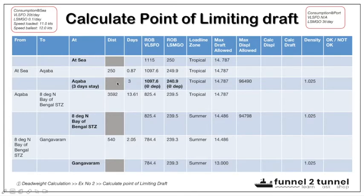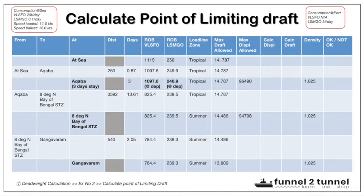The fourth column is the distance between the two legs. The fifth column is the number of days transiting from one point to another, or days staying at port. Subsequent columns are ROB of bunkers including VLSFO ROB and LSMGO ROB. Also included are the applicable load line zone, maximum draft allowed, maximum displacement allowed, calculated displacement at each voyage point, calculated draft, density at each point of interest, and a column to determine whether the condition is OK or not OK.